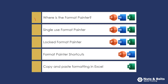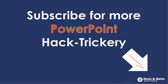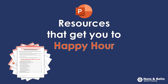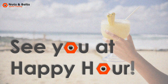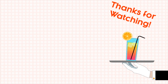So that teaches you where the two different Format Painters are, how to use the Single Use Format Painter, how to lock the Format Painter, how to use the Format Painter shortcuts in PowerPoint and Word, and how to use keyboard shortcuts to copy and paste formatting inside Microsoft Excel. If you're new to the channel and want to keep up to date on our latest PowerPoint hacks, tips and tricks, make sure to subscribe here on YouTube. And if you're looking for PowerPoint resources like PDF cheat sheets and other free courses, check out the links in the description box below. This is Taylor from Nuts of Bolt Speed Training — I'll see you at happy hour.